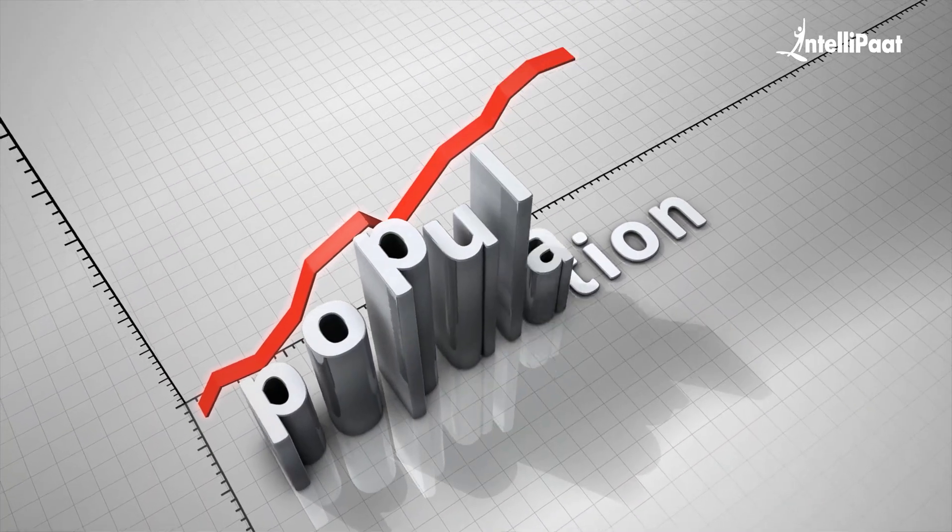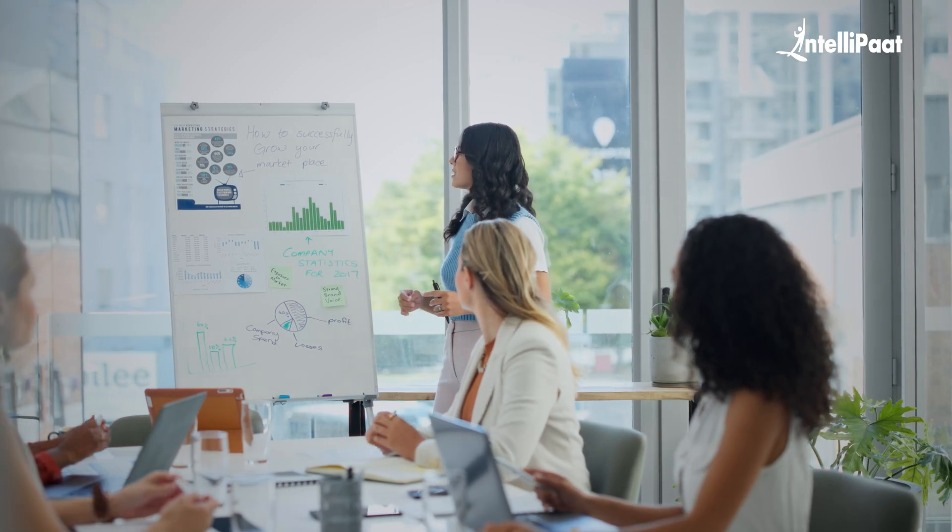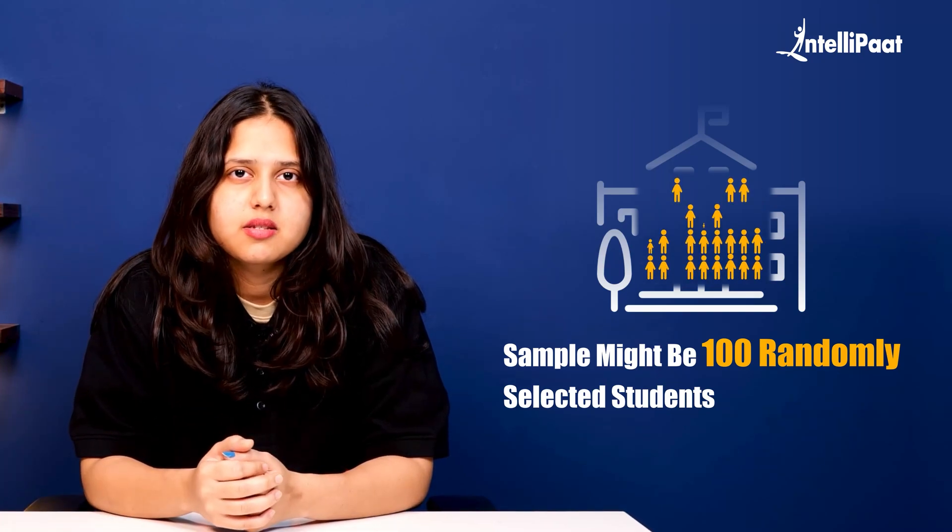The population is the entire group you're interested in, like all the students in a school or all the customers of a company. The sample is the subset of that population that you actually study. For example, if the population is all students in a university, the sample might be 100 randomly selected students. If chosen carefully, this sample can tell us a lot about the entire population.